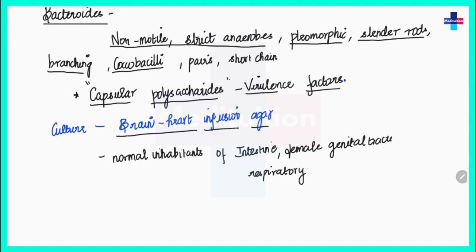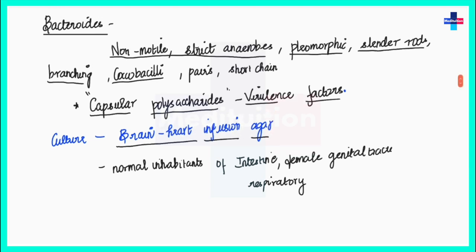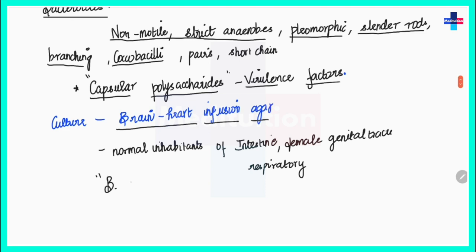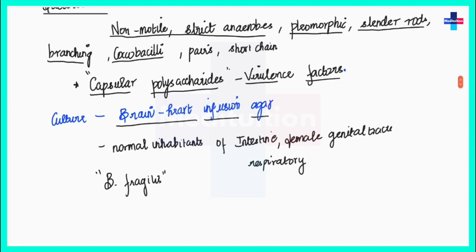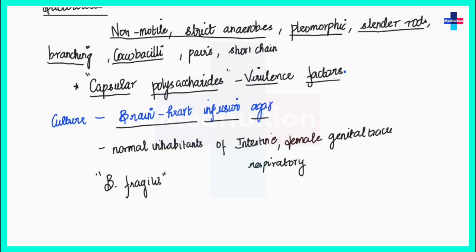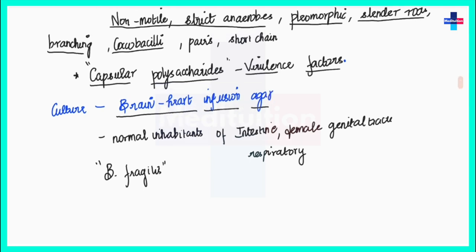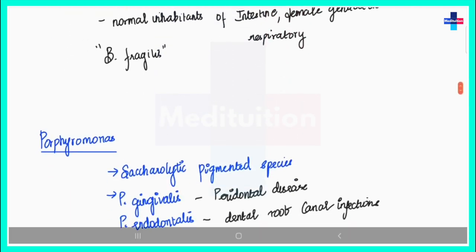Subspecies of Bacteroides include Bacteroides melaninogenicus and Bacteroides fragilis. Bacteroides fragilis is the anaerobe most frequently isolated from clinical specimens — including blood, pleural and peritoneal fluids, CSF, brain abscesses, and wounds.